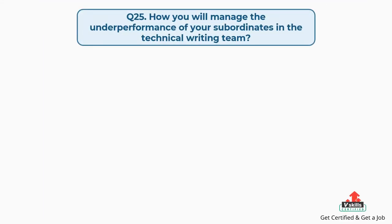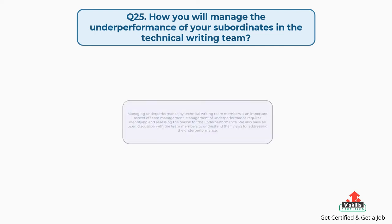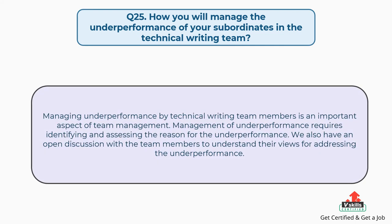Question number twenty-five: how will you manage the underperformance of your subordinates in the technical writing team? Managing underperformance by technical writing team members is an important aspect of team management. It requires identifying and assessing the reason for the underperformance, and we have an open discussion with team members to understand their views for addressing the underperformance.